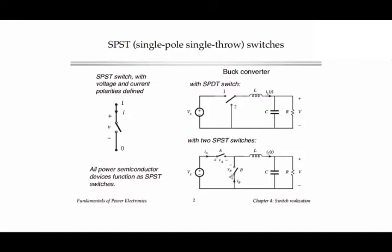The switch can be in position 1 if switch A is on only, or position 2 if switch B is on only. But we also have a case where we can turn both switches on or turn both switches off. For the buck converter, if we enable both switches at once we basically destroy the converter because we short out the power source, causing very large current that can destroy the devices. The case where both switches are off completely changes the characteristic of the converter.